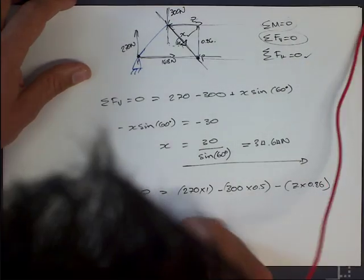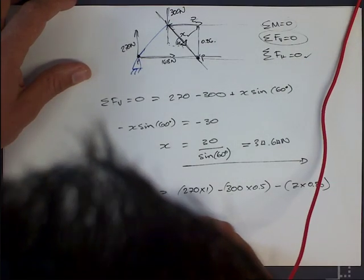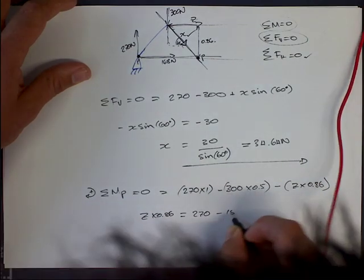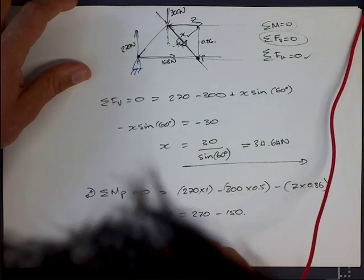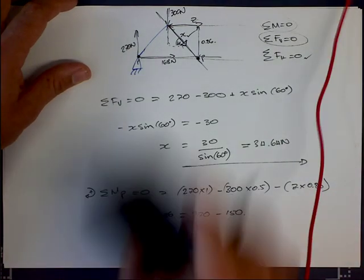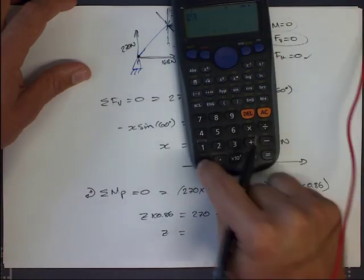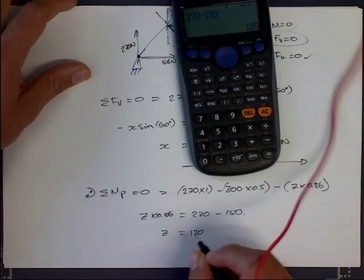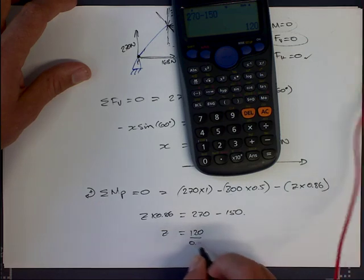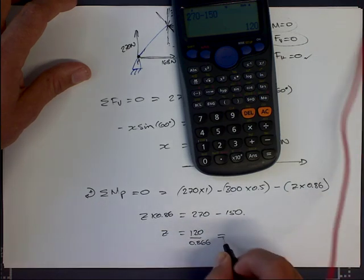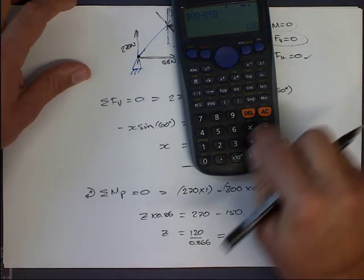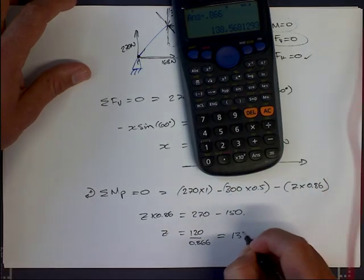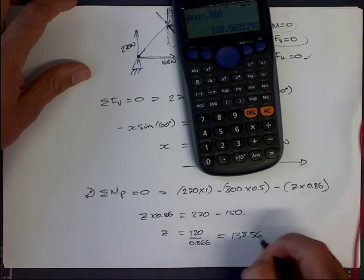Effectively, I get z times 0.86 equals 270 minus 150. So z equals, using our calculator, 270 minus 150 is 120 divided by 0.866. If we divide that by 0.866, we get an answer of 138.56 newtons.